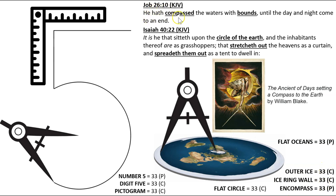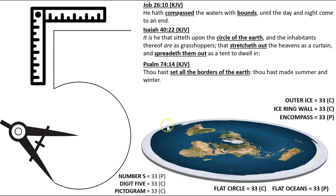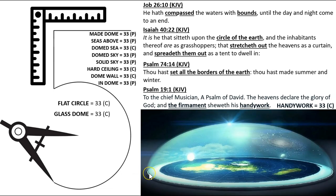Job 26:10: 'He hath compassed the waters with bounds until the day and night come to an end.' Proverbs 8:27-29: 'When he prepared the heavens, I was there. When he set a compass upon the face of the depth, when he established the clouds above, when he strengthened the fountains of the deep, when he gave to the sea his decree, that the waters should not pass his commandment, when he appointed the foundations of the earth.' Outwards from the coastal boundary is a circular continent of snow and ice — Antarctica on the AE map. At its end the walls of the vaulted dome enclosing the earth meet the land, known in the Bible as the firmament. Psalm 19:1: 'The heavens declare the glory of God, and the firmament showeth his handiwork.' Handiwork — 33.